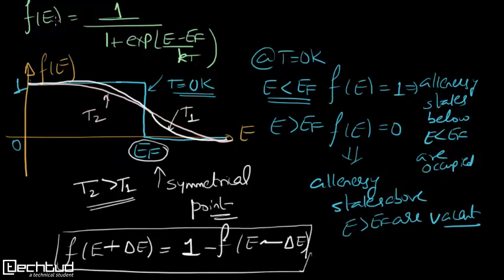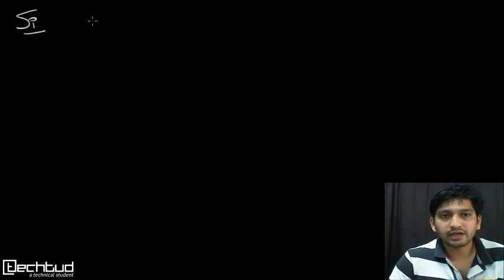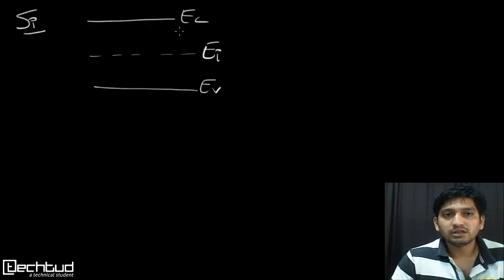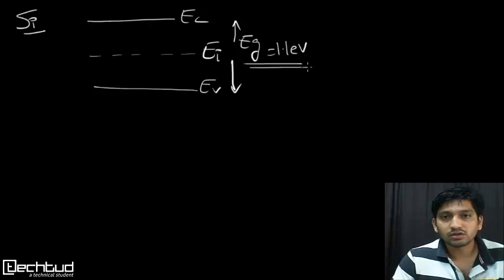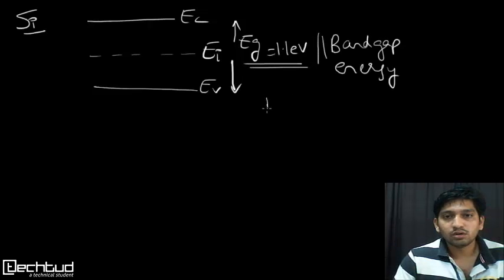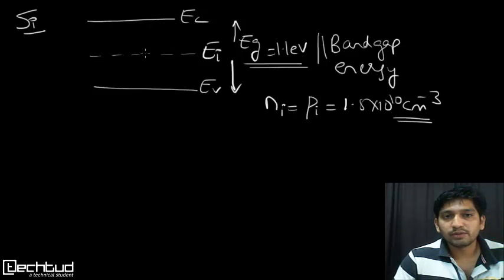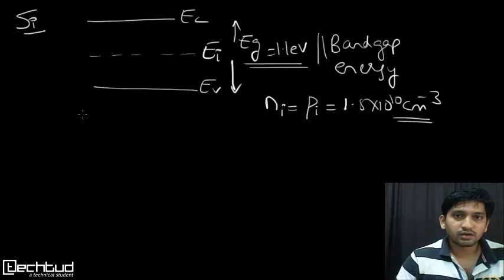A question arises: we know the band diagram for silicon with conduction band EC and valence band EV. The energy gap EG for silicon is 1.1 electron volts. We also know that the intrinsic carrier concentration equals the hole concentration, approximately 1.5 times 10 to the power of 10 per centimeter cube for silicon. In this case the Fermi level EF is almost midway between EC and EV.